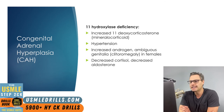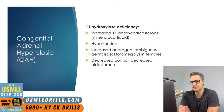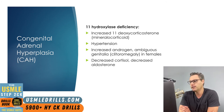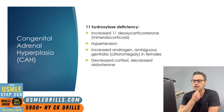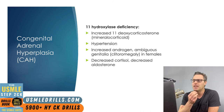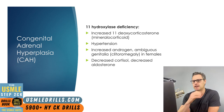Next is the 11-hydroxylase deficiency. Whereas 21-hydroxylase deficiency causes excess 17-OH progesterone, 11-hydroxylase deficiency leads to excess 11-deoxycorticosterone, which is a weak mineralocorticoid. Patients have decreased cortisol, decreased aldosterone, and increased androgen levels, and they present with hypertension and, in females, ambiguous genitalia.